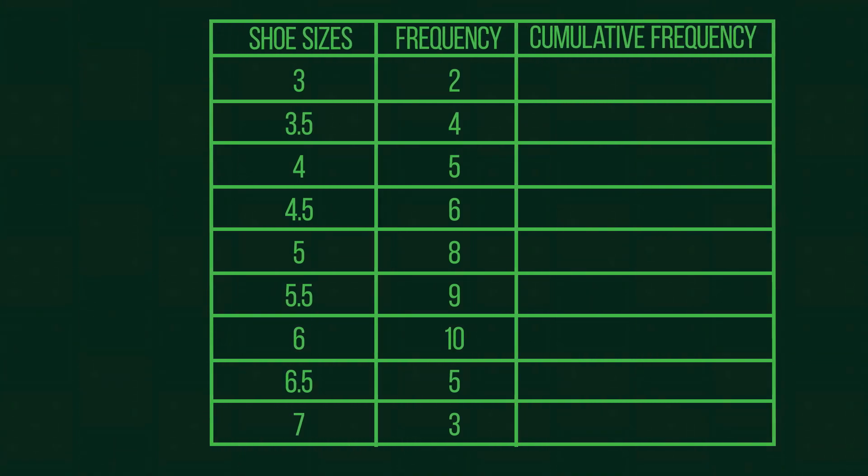To identify the 26.5 position, we need to add a column to our table called cumulative frequency. Cumulative frequency is a total of values up to that point. The first value will be 2, as this is the frequency of size 3. The second value will be these two plus the frequency from the next set, 3.5. Therefore, the second cumulative value is 6. See if you can fill in the remaining values.